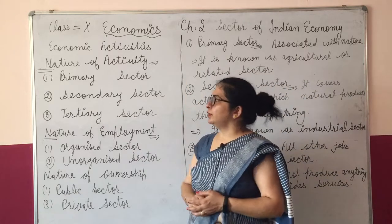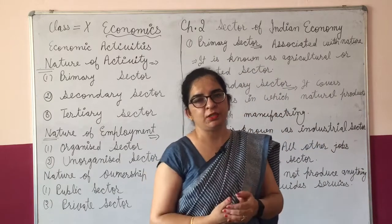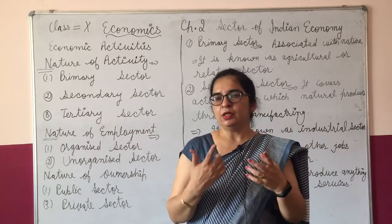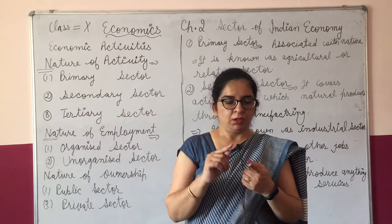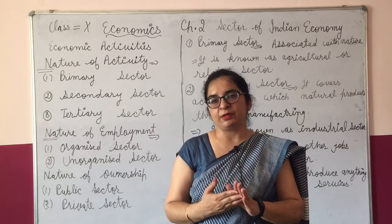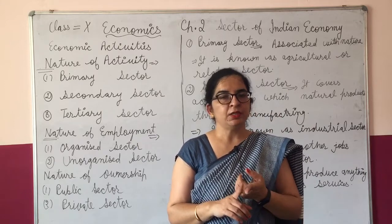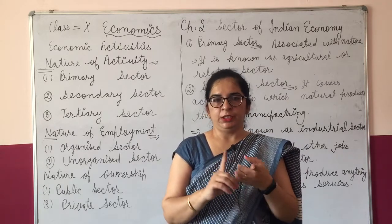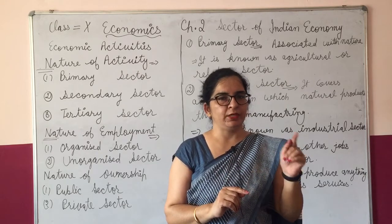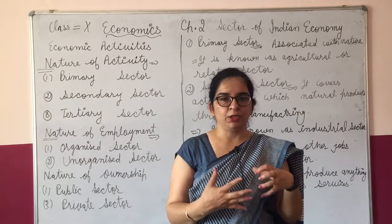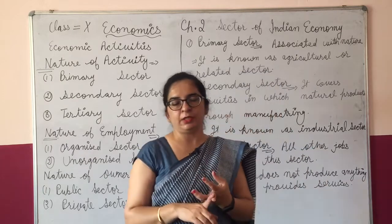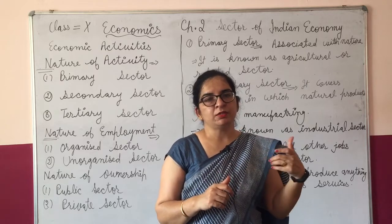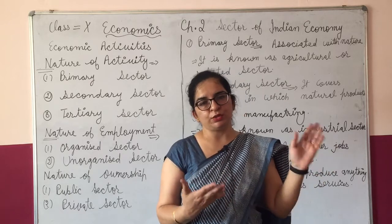Let's start with the first — nature of activity. The activities we do can fall into primary sector, secondary sector, or tertiary sector. For example, if a person is a farmer, they go into primary sector because agriculture is a primary activity. If we talk about an industrial businessman, they go into secondary sector because they make and produce things. A person providing banking or hotel services goes into tertiary sector because they provide services.